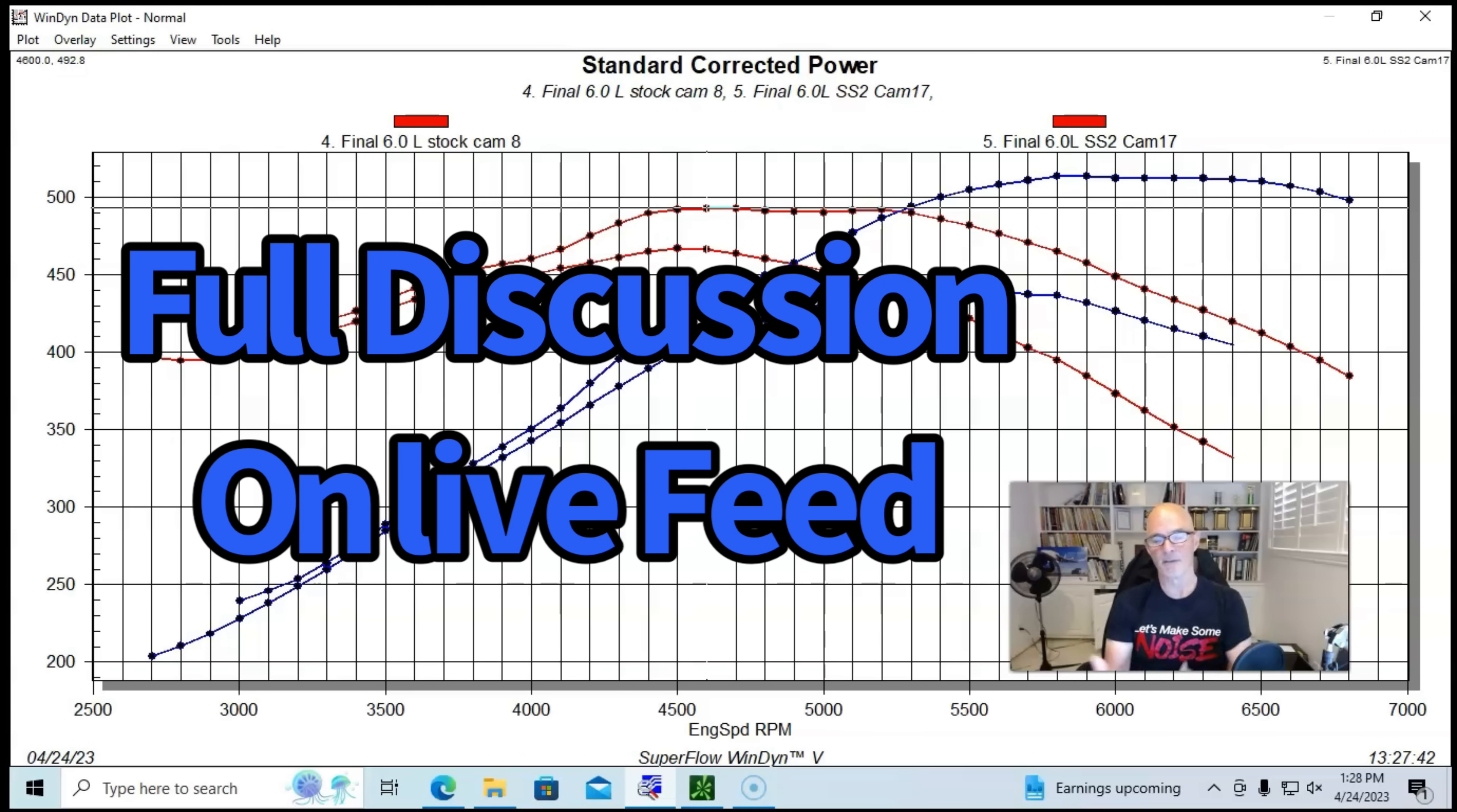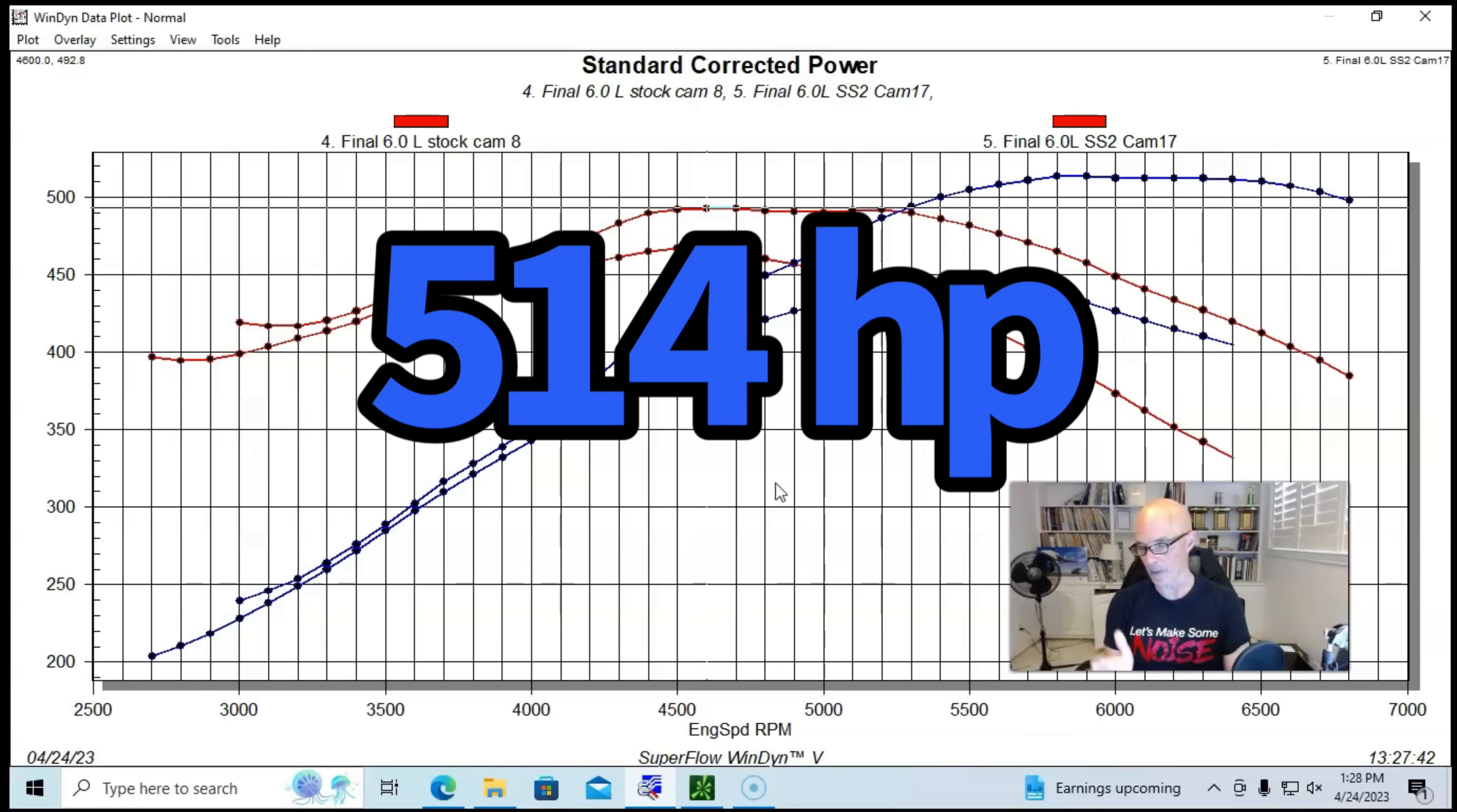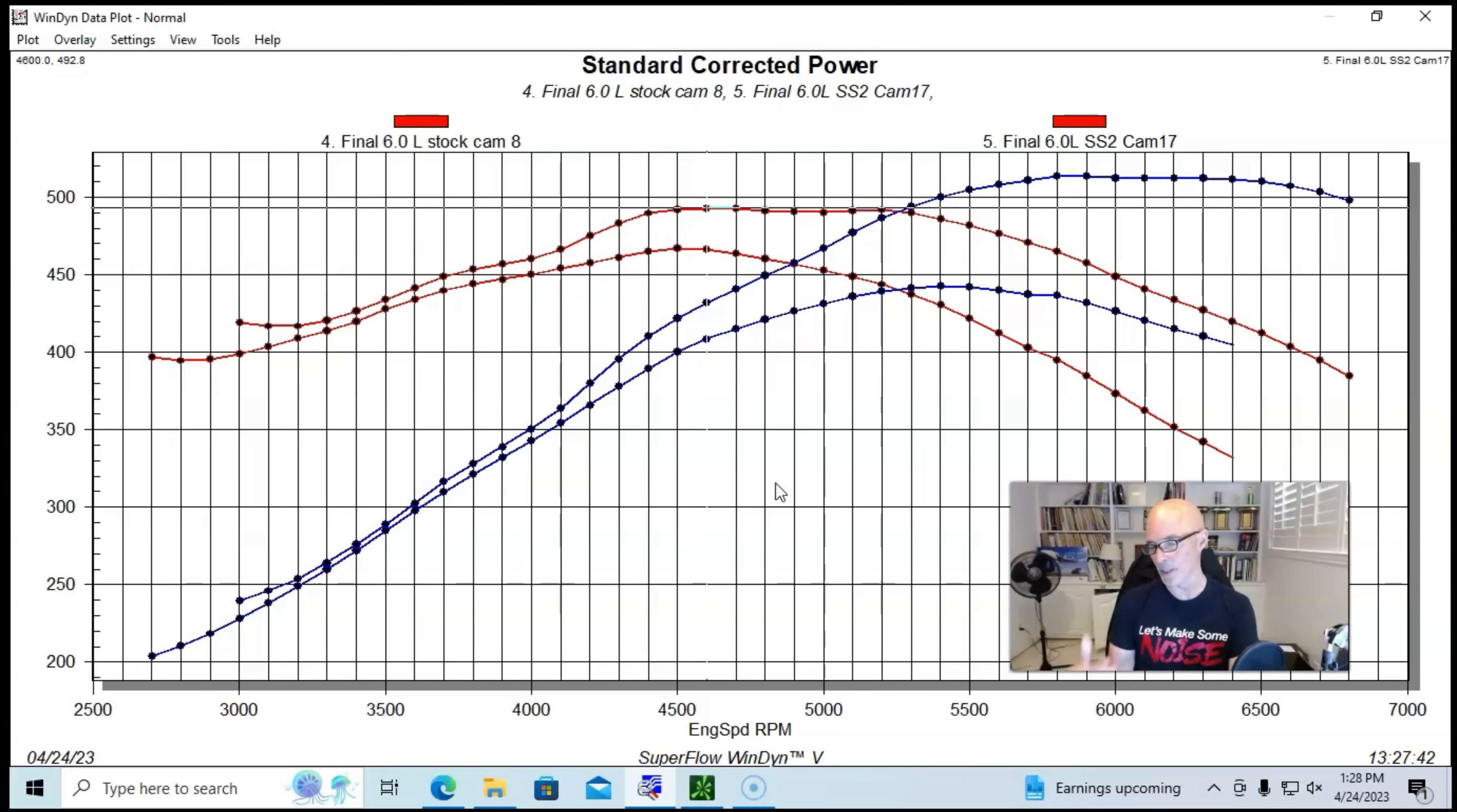So we got less of a horsepower gain and more of a torque gain compared to the L33 camshaft test that we did on that smaller displacement motor. Now part of the reason for that is obviously we're comparing it to different camshafts. We're not comparing it to the same camshaft on both motors. So we have a different starting point and then our ending point.